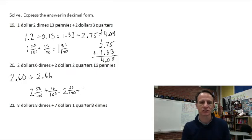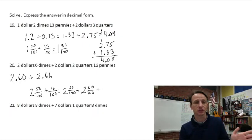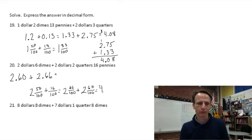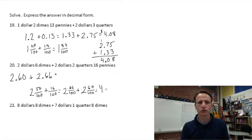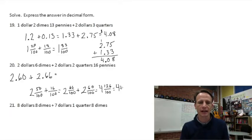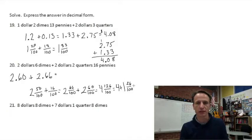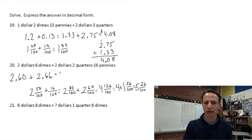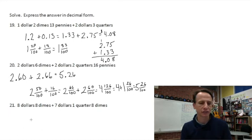Now add two and 60 hundredths (from the first part) to two and 66 hundredths: 2 + 2 = 4. For hundredths: 66 + 60 = 126 hundredths. Break that down: 100 hundredths is one whole, leaving 26 hundredths. So 4 + 1 = 5 and 26 hundredths. In decimal form: 5.26.